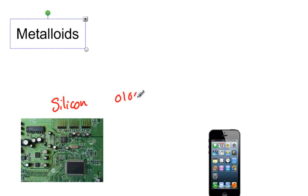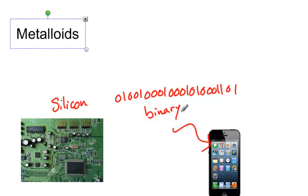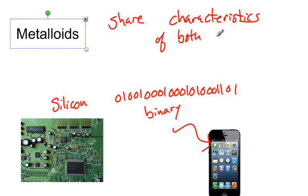And as we do that, it creates a series of codes. Zeros, ones, zeros being when it's off, ones being when it's on. And as we do that, this is the language of binary. And that's what allows all of our computer devices. So if we don't have metalloids, we don't have iPhones, we don't have anything that has a circuit board. Our TVs don't work. Our computers don't work. Our video games don't work. So metalloids share characteristics of both metals and non-metals.